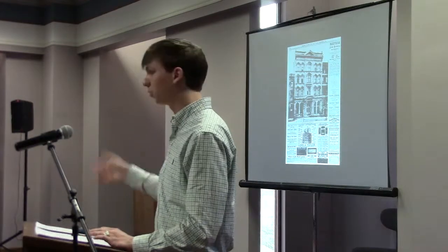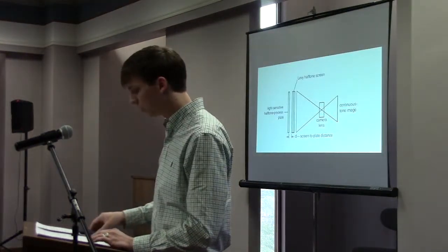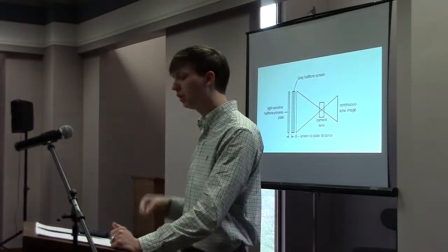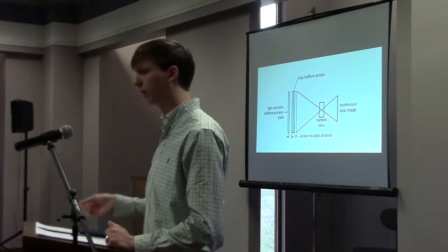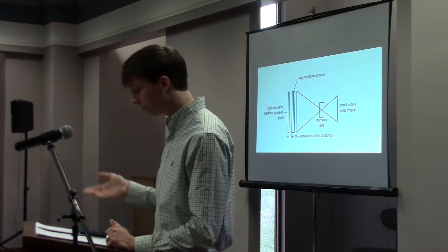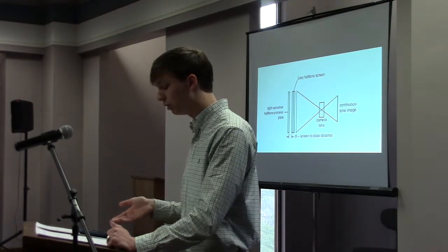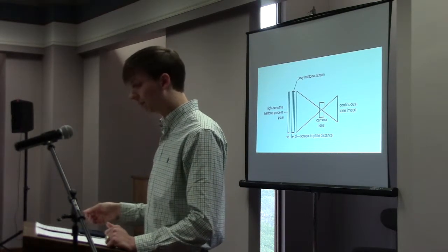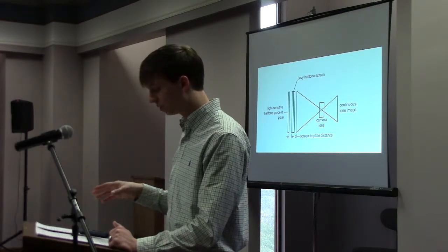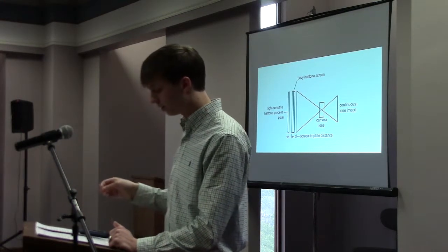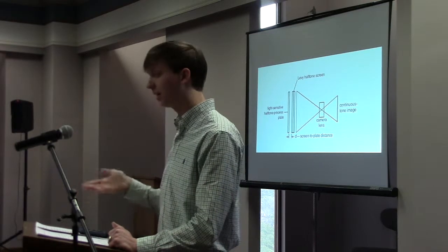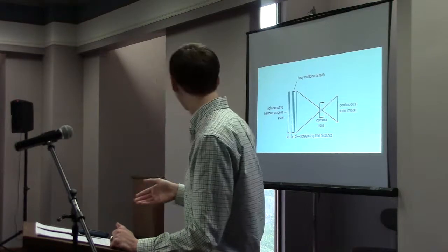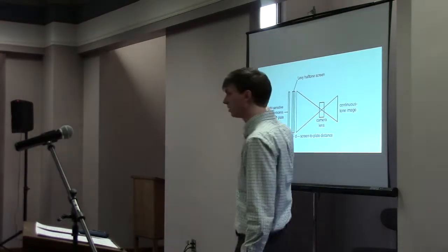Getting into the process — the definition of the half-tone process is: a process that translates continuous tonalities of photographic prints or negatives into a series of dots. Different methods of mechanical printing are used to produce a print that simulates the continuous tonality of reproduced photographs. In layman's terms, this process creates a series of dots that to the human eye appear to be a continuous tone or value. This process works with the use of a half-tone screen.